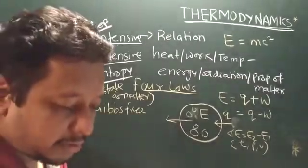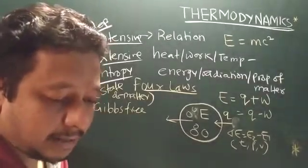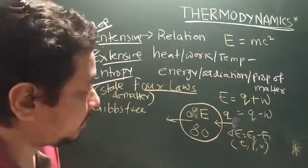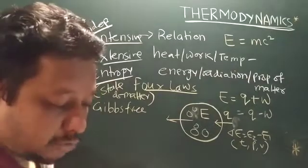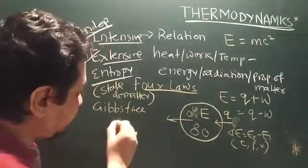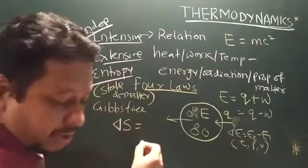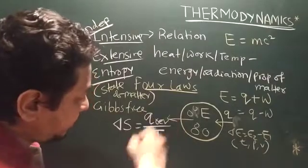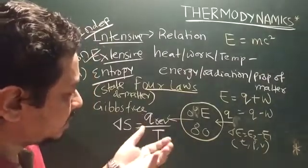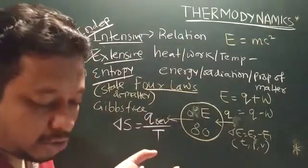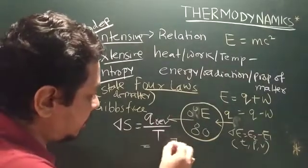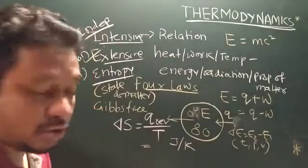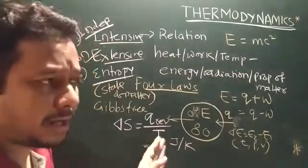Now coming to the second law: the second law defines that entropy can be quantified and related to the state of matter. Once you know the entropy, delta S can be measured as the heat exchange Q reversible divided by the absolute temperature. The energy exchange is in kilojoules or joules, and temperature is in Kelvin, so entropy is expressed in joules per Kelvin.